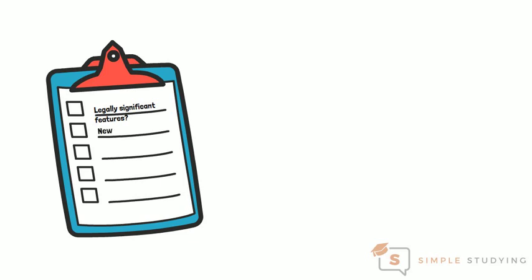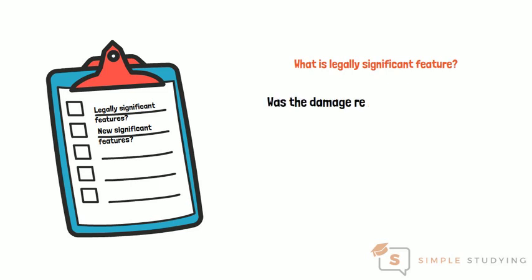They will also have to consider whether there are any new and significant features in the case before them which tend to suggest that there should or should not be a duty of care. The legally significant features of any particular situation vary from case to case, but include things such as whether damage of the relevant type to a person like the claimant was reasonably foreseeable.